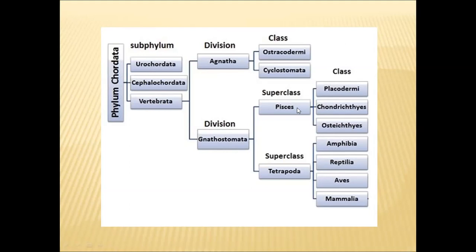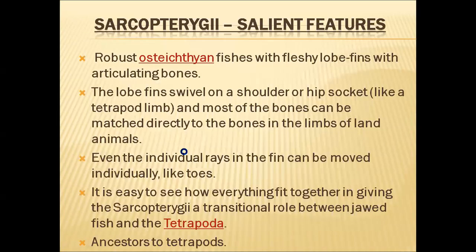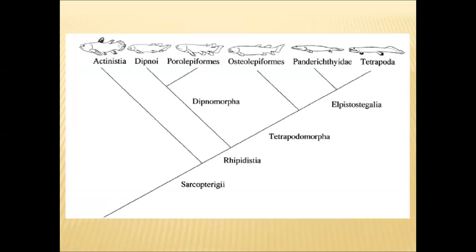In the Pisces group, we have four classes: Placodermi, Acanthodii, Chondrichthyes, and Osteichthyes. Placodermi and Acanthodii represent the extinct groups. Chondrichthyes represents the cartilaginous fishes of today. Osteichthyes represents the bony fishes that are living now. This Osteichthyes group is divided into two subclasses: Actinopterygii and Sarcopterygii.